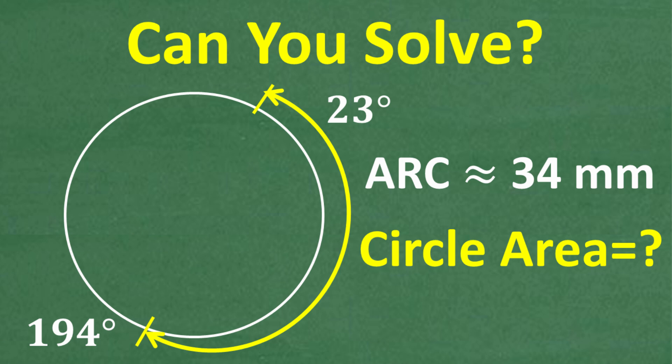In this video, we've got an interesting circle problem. We want to find the area of this circle, but the information we have is an arc. An arc is basically a measurement or length of some portion of the circle. In this case, the arc starts at 23 degrees and goes to 194 degrees, so from here to here that arc length is approximately 34 millimeters. With all this information, we want to find the area. If you think you can figure this out, go ahead and put your answer in the comment section, and I'm going to solve this problem step by step.